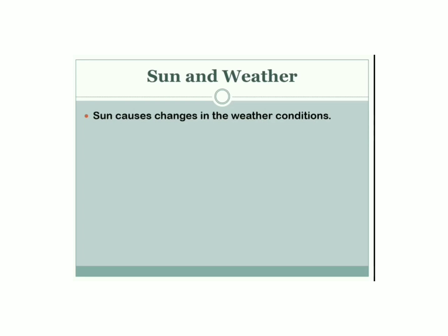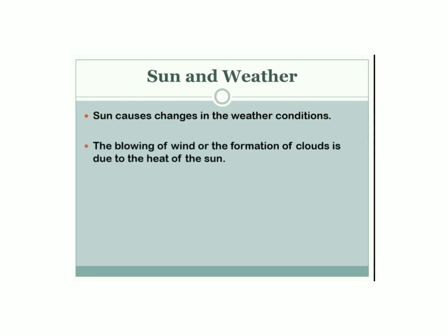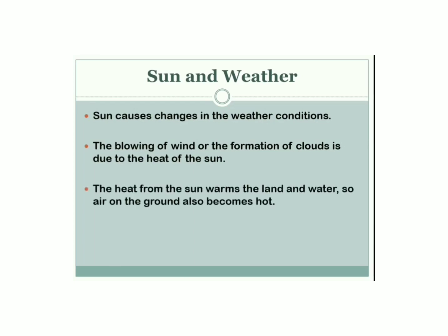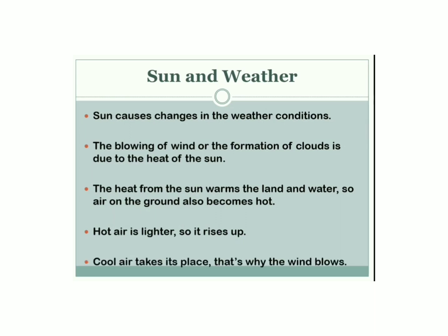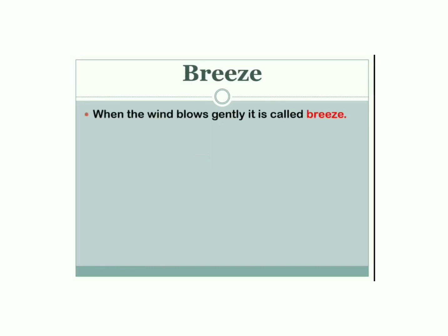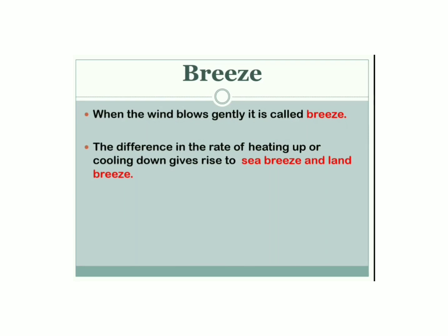The sun causes changes in weather conditions. The blowing of wind and the formation of clouds is due to the heat of the sun. The heat from the sun warms the land and water, so air on the ground also becomes hot. Hot air is lighter, so it starts to rise up, and the cool air from the surroundings starts taking its place — that's why the wind blows. Moving air is called wind. When the wind blows gently, it is called a breeze. Heating of land is faster than water, and this difference in the rate of heating and cooling gives rise to sea breeze and land breeze.